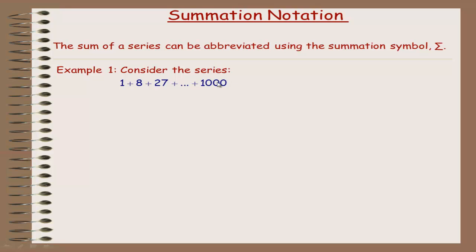A series is just the sum of a bunch of terms, or the difference. If we wrote 1, 8, 27, up to 1000, that would be a sequence. When you add together all the terms or subtract them, that's called a series. Notice what these numbers are — they're the perfect cubes: 1 is 1 cubed, 8 is 2 cubed, 27 is 3 cubed, and 1000 is 10 cubed.